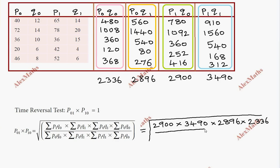When we cancel terms, 2900 cancels with 2900, 2336 cancels with 2336, 2896 cancels with 2896, and 3490 cancels with 3490. This equals 1, satisfying the Time Reversal Test.